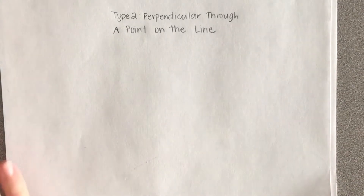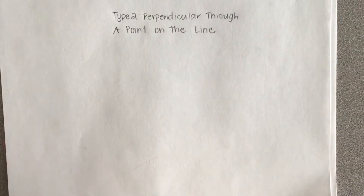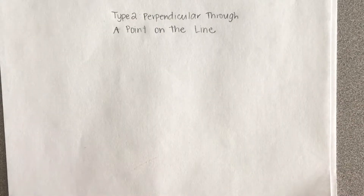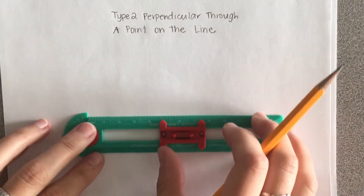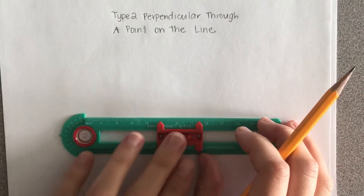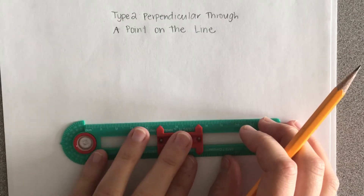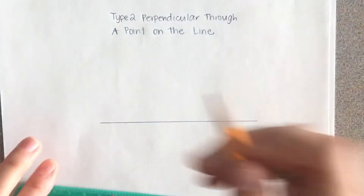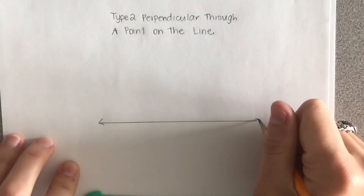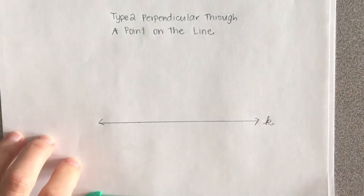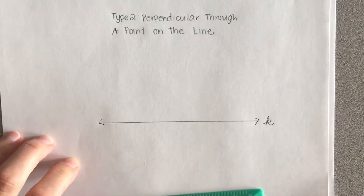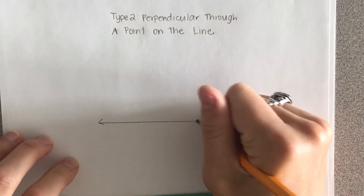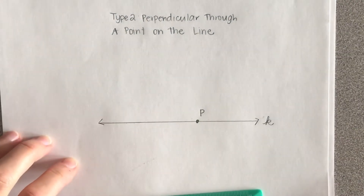Our second construction type is creating a perpendicular line through a point that's given on the line. The first thing I'm going to do is draw a straight line using the straight edge of my compass — make it nice and long. I'm going to name this line K. Then I'm going to place a point somewhere on this line; it doesn't matter where you put the point. I'm going to name that point P.